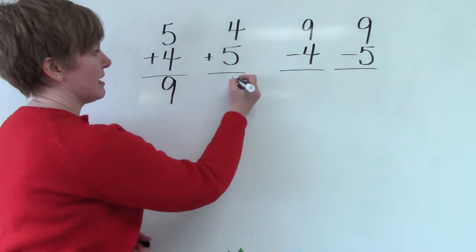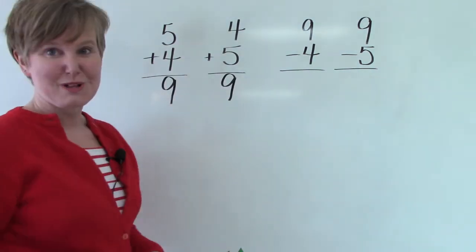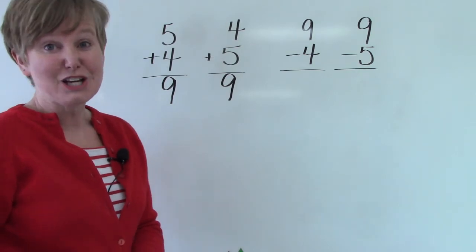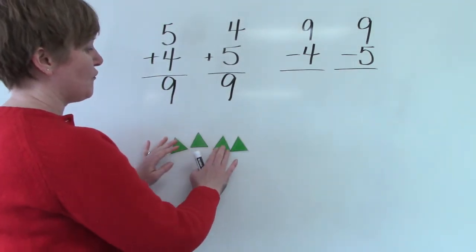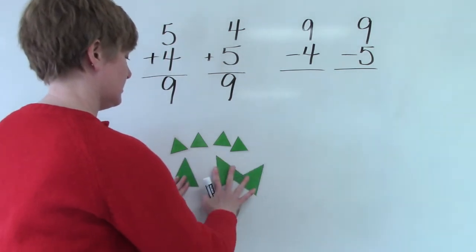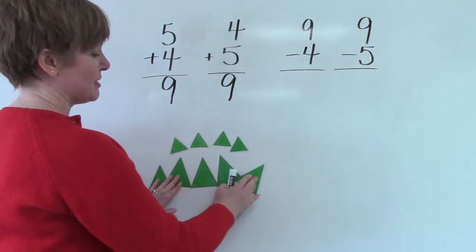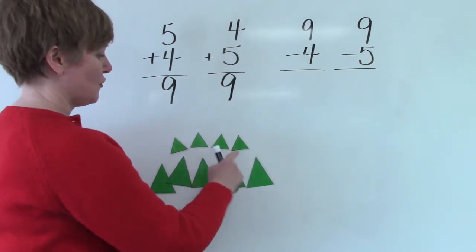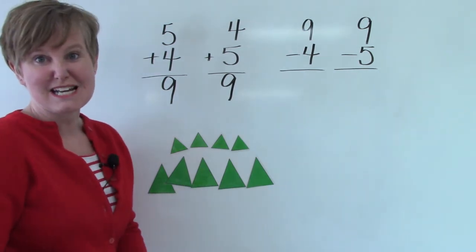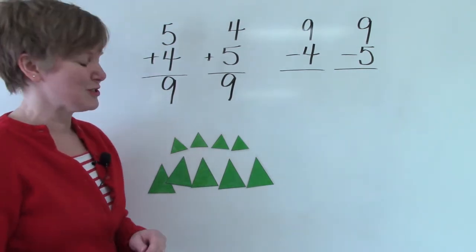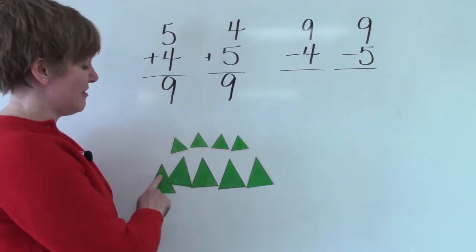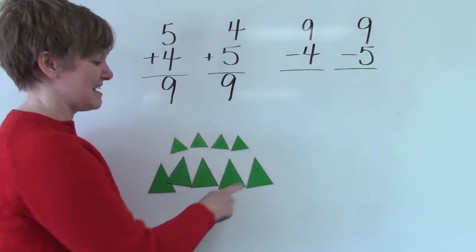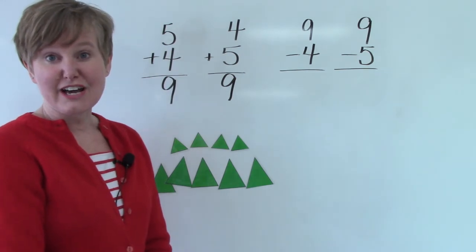5 plus 4 is 9 and 4 plus 5 is 9. Let's take a look at some triangles. I have 4 little triangles and 5 big ones. 4 plus 5 is 9. Let's just count them to make sure. We have 4. 4 and then we'll count on. 5, 6, 7, 8, 9. I have 9 triangles.